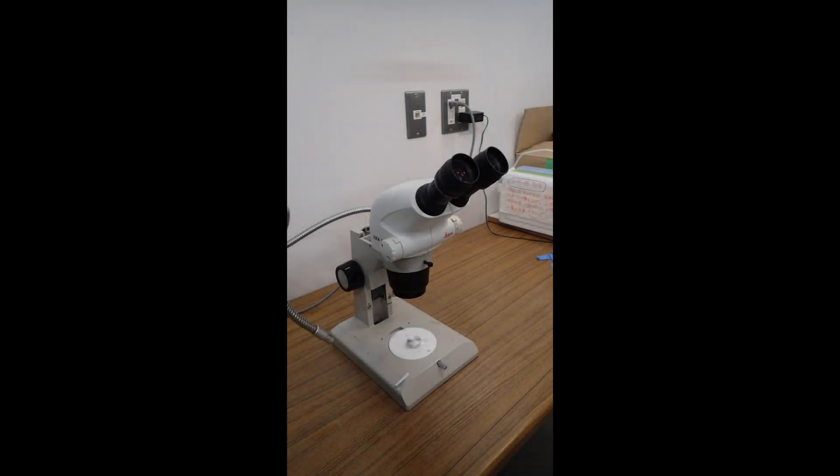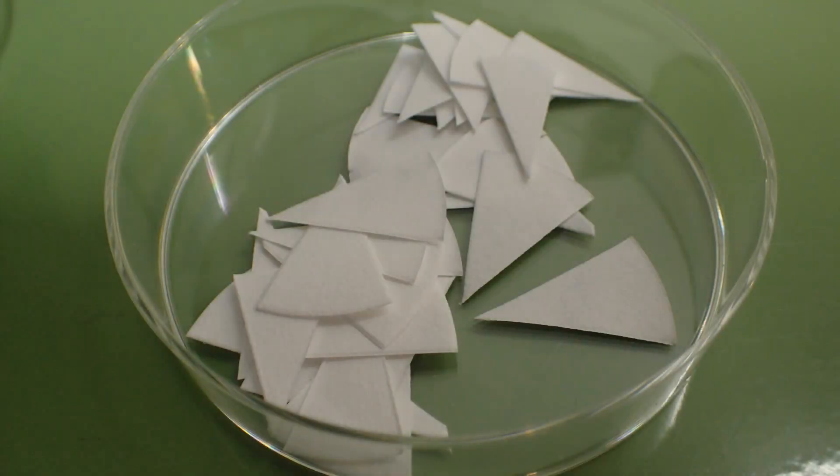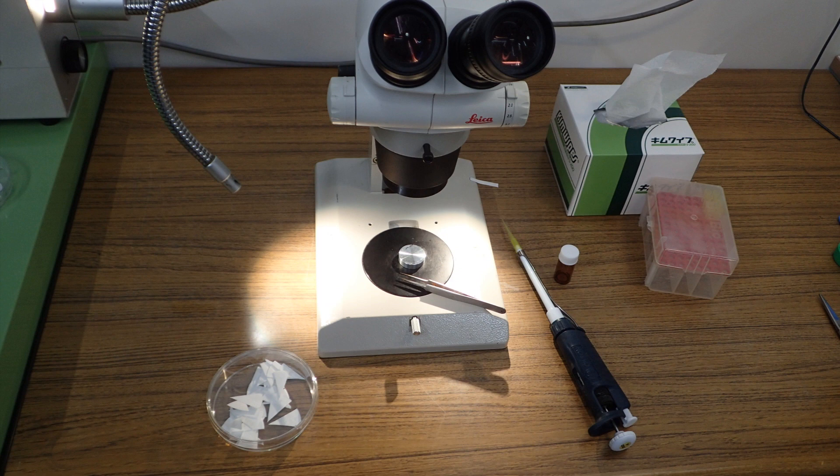Prepare a stereo microscope. Cut the filter paper into the appropriate size. This is a preparation for removing excess nanosuit solution. Prepare the sample stage, tweezers, pipetmen, tips, kim wipes, etc. on the laboratory table.